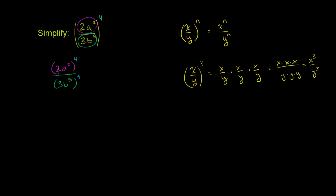Now we can use the property that if I take the product of things and raise that to a power, that's the same thing as each of the things in the product raised to that power. So if I have x times y to the nth power, this is the same thing as x to the nth times y to the nth power.